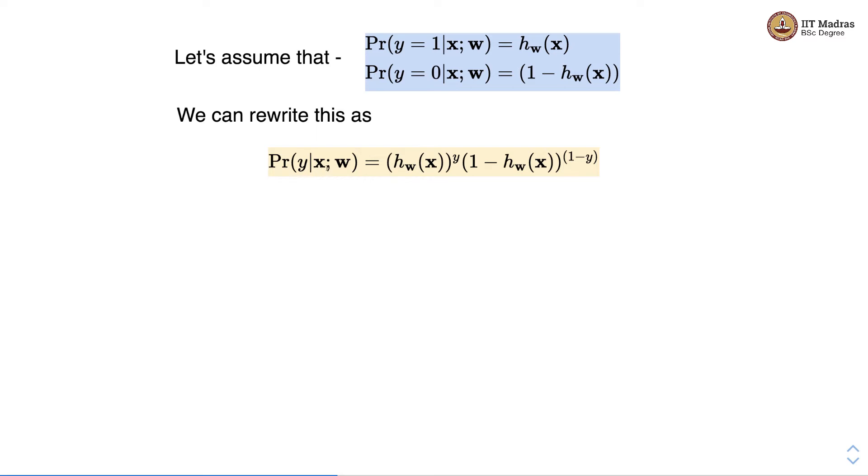Probability of y given the feature vector parameterized by w is hw of x raised to y into 1 minus hw of x raised to 1 minus y. Let us see that this equation is indeed equivalent to what we have written here.